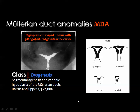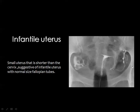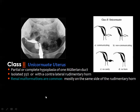Class one uterine anomalies are known as dysgenesis of the uterus, including agenesis or hypoplasia of the uterus and upper two-thirds of the vagina. A very small uterine cavity may be seen but the tubes are present and patent, as shown on hysterosalpingogram. Infantile uterus shows a very small uterus with normally developed patent fallopian tubes. Class two is unicornuate uterus, with a single uterine cornua and the second being rudimentary or absent.